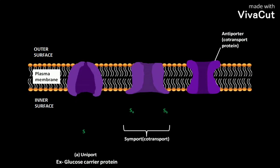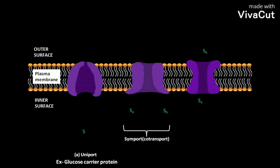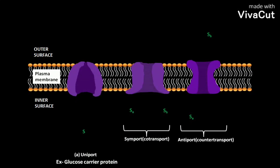Antiporters are also called co-transport proteins. The antiporter transports one solute molecule, sucrose, denoted as SA, and another solute molecule or various ions, denoted as SB, simultaneously in opposite directions. The antiporter couples the movement of one type of ion or molecule against its concentration gradient with the movement of one or more different ions down its concentration gradient. This type of transport is called antiport or counter transport because SA and SB are moved in opposite directions.